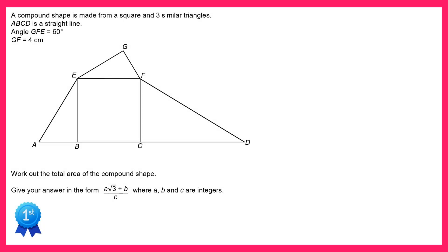Hello and welcome to the solution video for spicy question number 24. In this question we have a compound shape made of a square and three similar triangles. We're given some information: angle GFE is 60 degrees and GF is 4 cm, so let's add that onto the diagram.